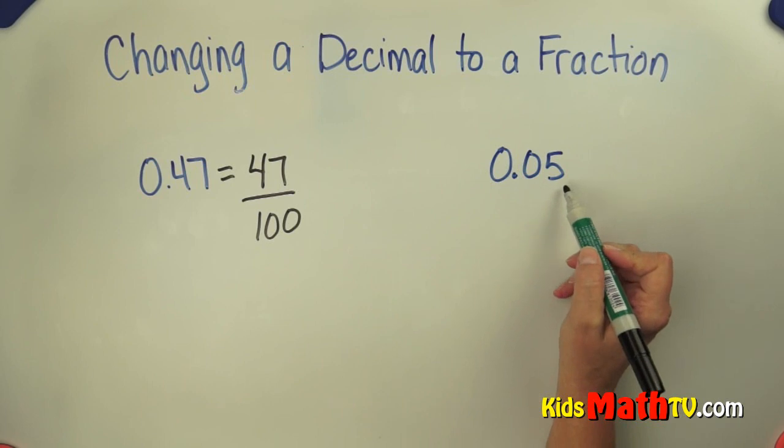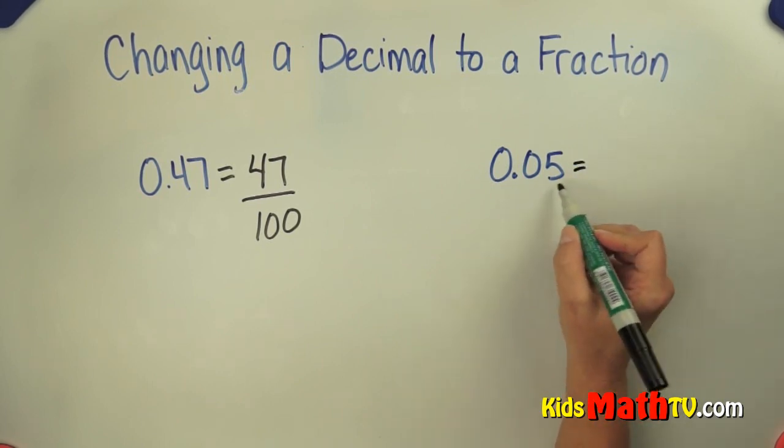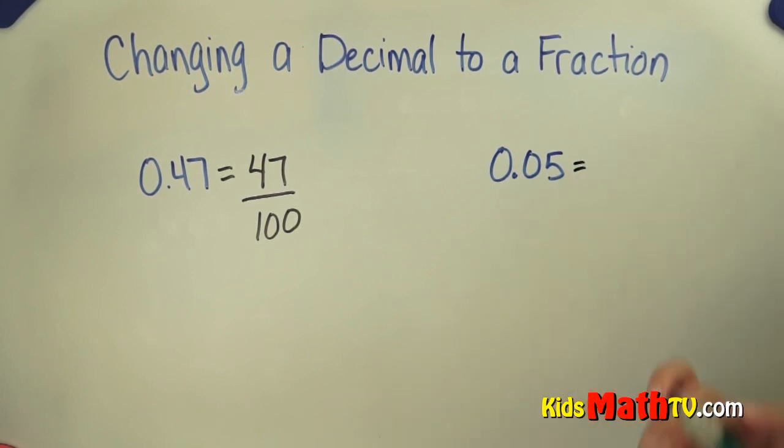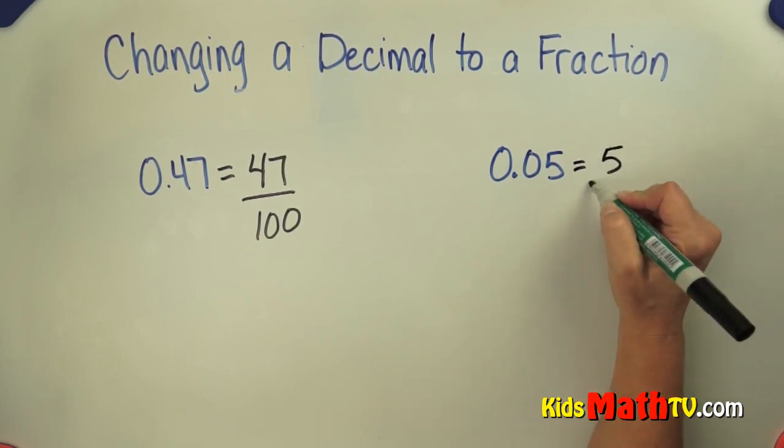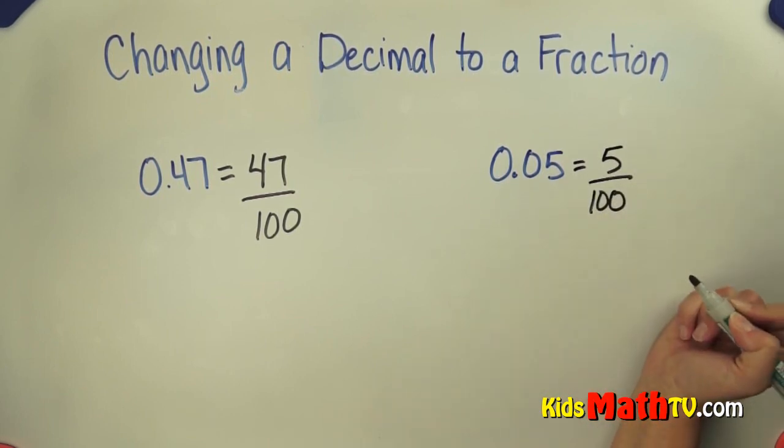Let's try another one. This is 5 hundredths. If we read it as a decimal, it sounds like a fraction as well. So 5 hundredths is simply 5 hundredths, 5 over 100.